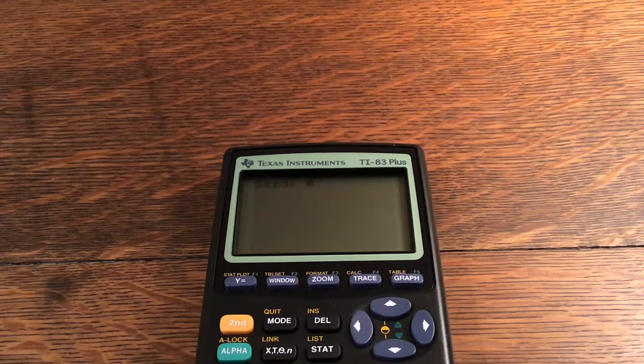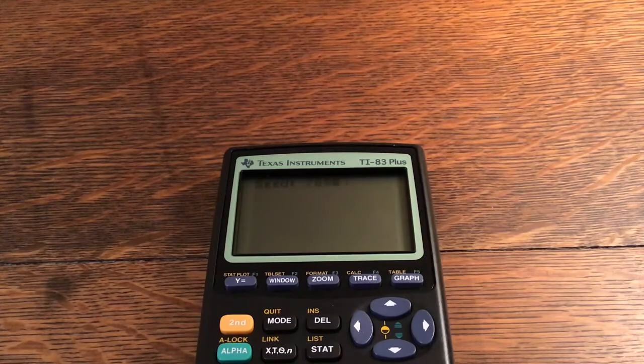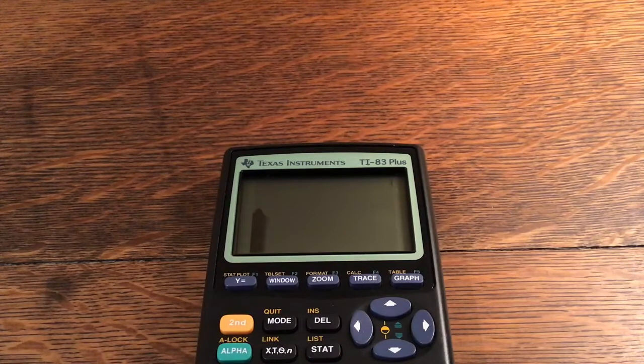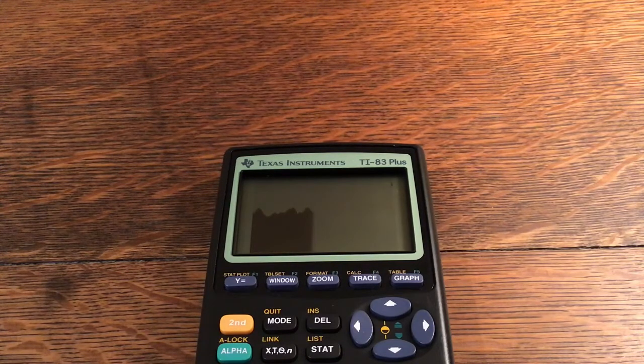I'm going to do like 789456123 because why not. As you can see it will randomly generate a terrain which is really cool.